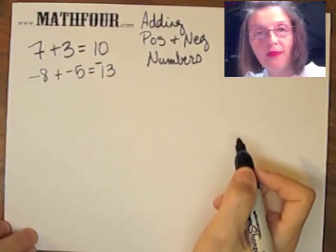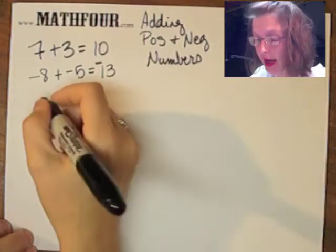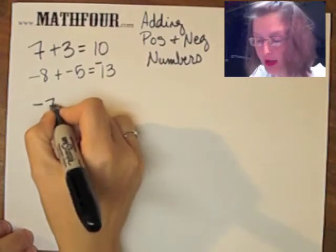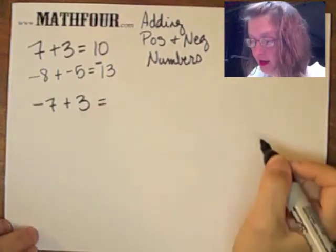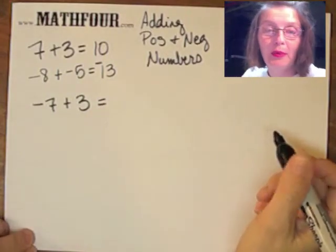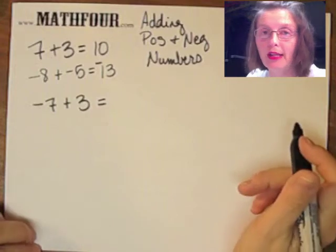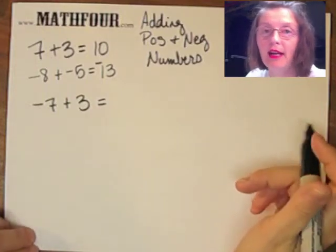The trouble comes when you have two different signs. So like negative 7 plus 3, what do you do? You have to remember some crazy rule like subtract them and then take the sign of the larger number.